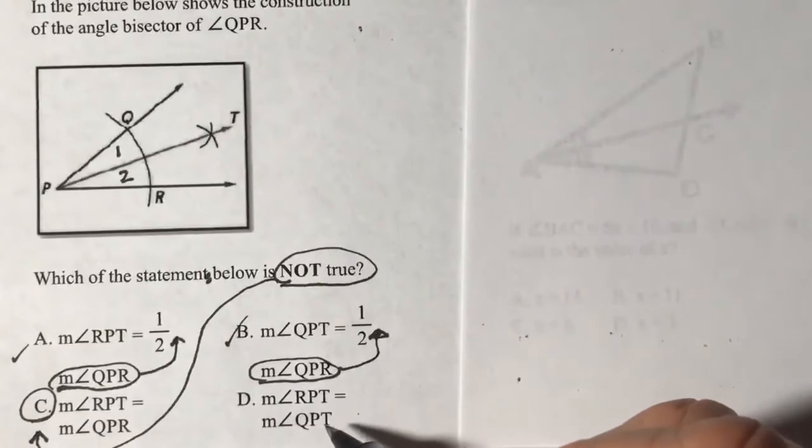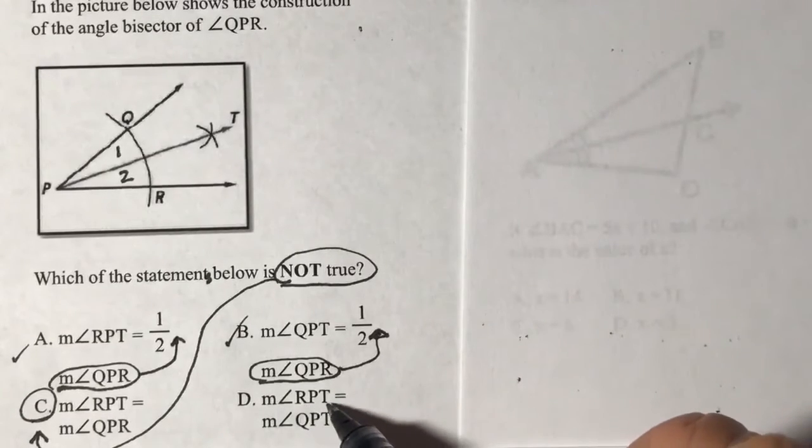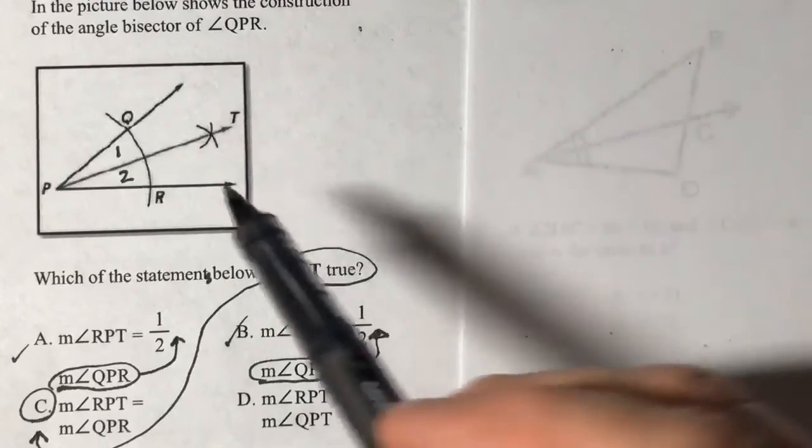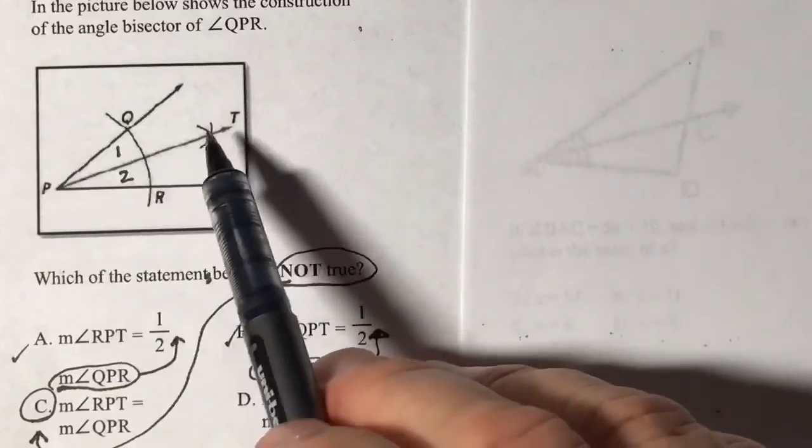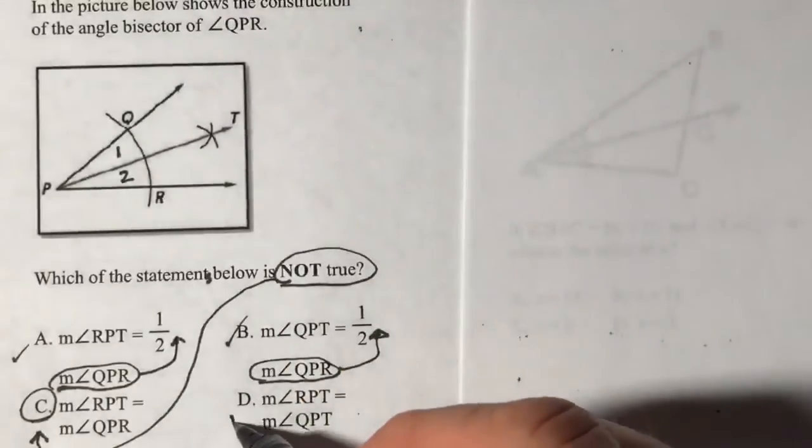Let's just double check the last one here real quick while we're here. So, RPT, the angle RPT is equal to QPT. Let's take a look at that. RPT is equal to QPT. That's true.